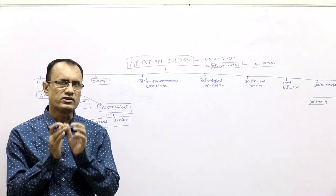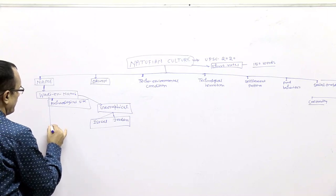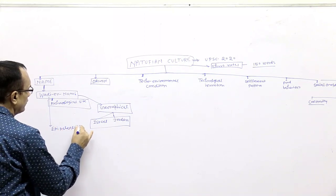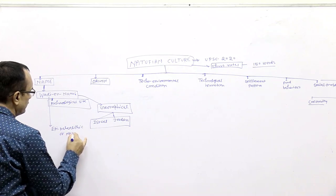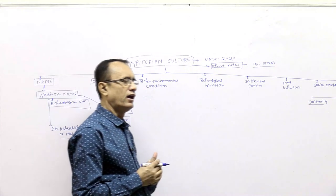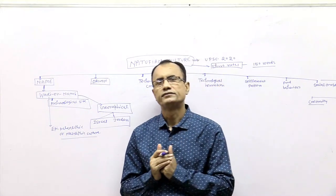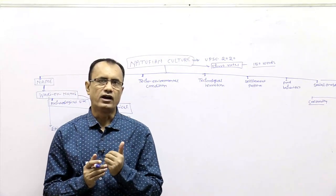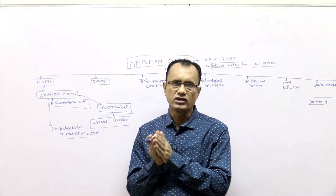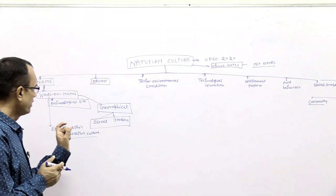Third, Natufian culture is a part of the Epipaleolithic or Mesolithic culture of Israel and Jordan. In the Fertile Crescent, we include Israel, Jordan, Syria, Iran, and Iraq. So Natufian was in the Fertile Crescent, but their main concentration was in Israel and Jordan.